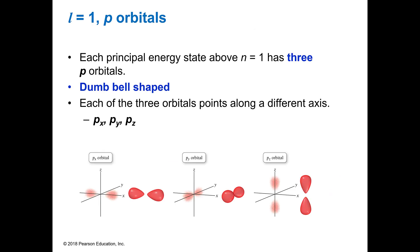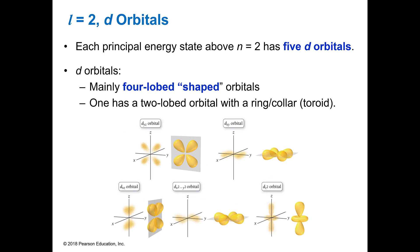L equals 1 is your P orbital, and they call these dumbbells. And there's three different dumbbells, one on your X axis, one on your Y axis, and one on your Z axis.